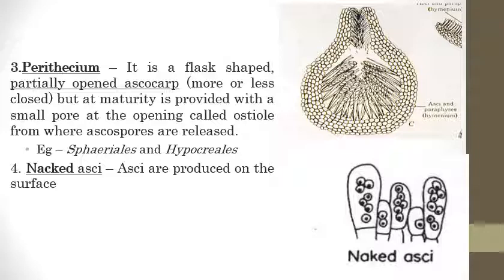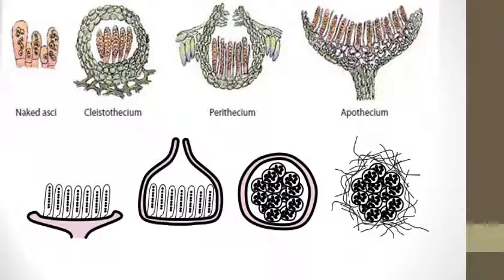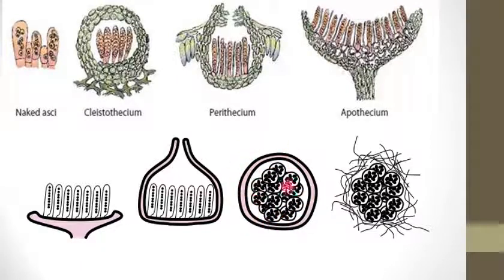Examples under Perithecium include Sphaeriales and Hypocreales. The last type is naked asci — asci not produced on any surface. To summarize: Cleistothecium is completely closed, Apothecium is completely open, Perithecium is partially open with a small opening called ostiole, and naked asci are not associated with any fruiting body.